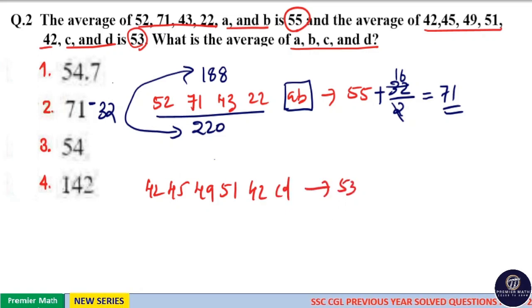Which means the sum of these five numbers is equal to 53 times 5, which is 265. Now the real sum is equal to 42 plus 45 is 87, plus 49 is 136, plus 51 is 187, plus 42 is 229. So 265 minus 229 is equal to 36. Which means here the difference is equal to 36.